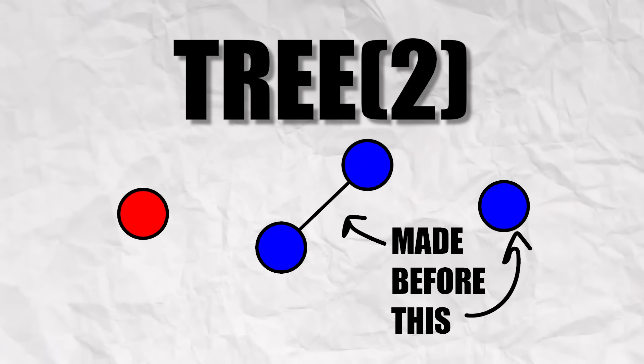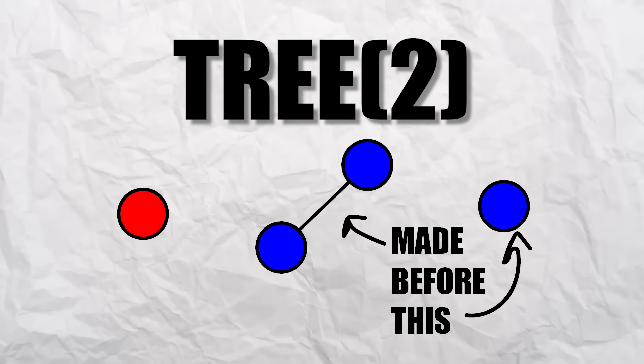With tree 1, we can only make one, because every other tree contains this dot. Tree 2 has three trees. One with a red dot, one with a blue dot, and one with both dots.